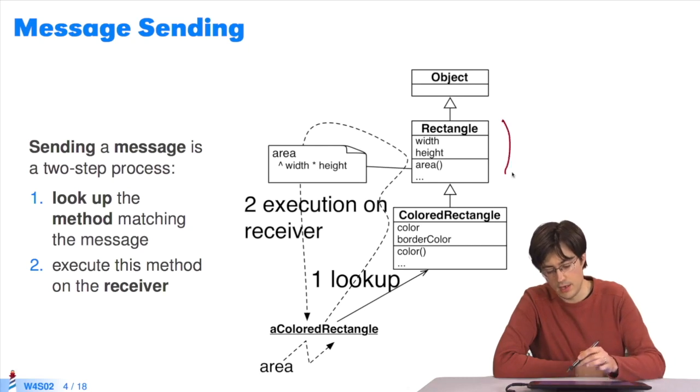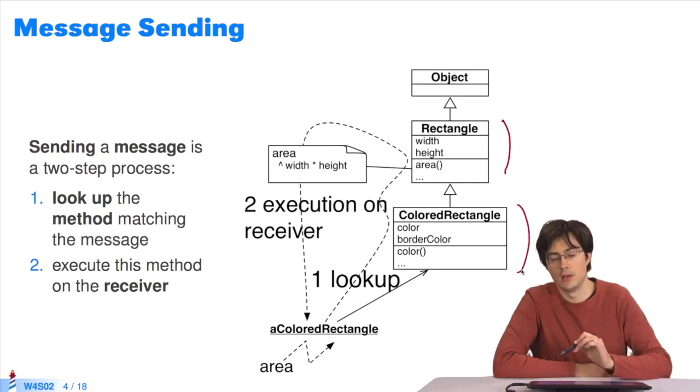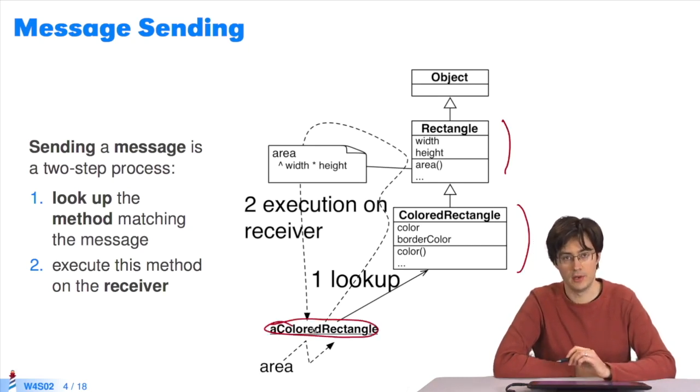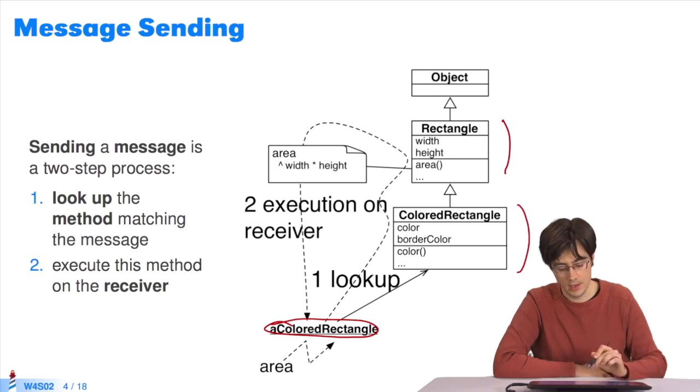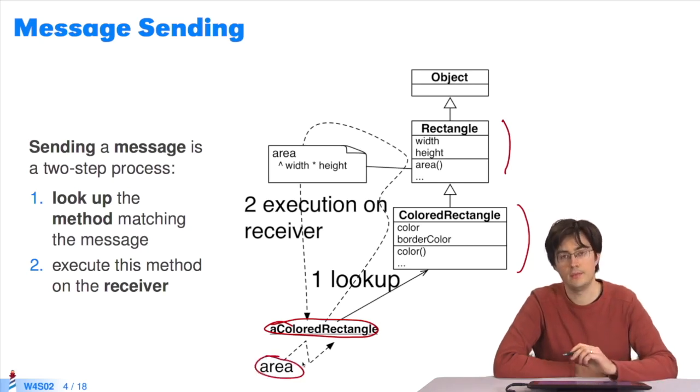So here, we have the rectangle class, the colored rectangle class, and an instance of colored rectangle called acolored rectangle. We send the message area to this object.